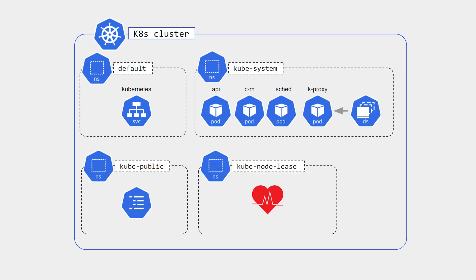The next one is kube-node-lease, which is a newly added namespace in the latest versions of Kubernetes. This namespace is used for lease objects associated with each node. It improves the performance of nodes and also improves heartbeats, helping to determine the availability of all nodes in a Kubernetes cluster.